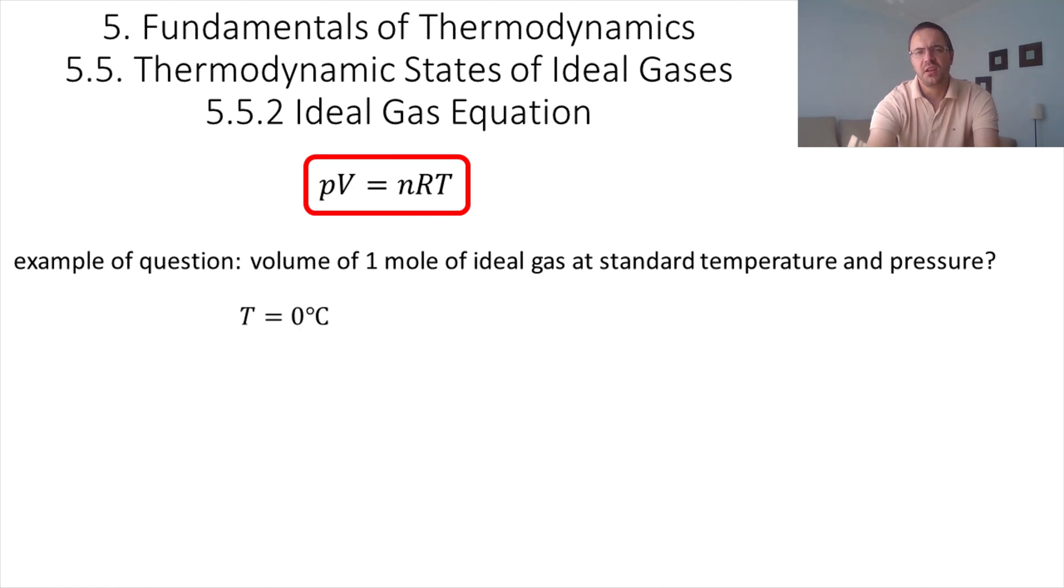Now, the standard temperature and pressure are actually defined precisely. The standard temperature is taken as zero degrees Celsius and the standard pressure is one atmosphere, that is 1.013 times 10 to the 5 Pascals. Now, don't forget to convert the temperature in Kelvin. So zero degrees Celsius is 273.15 Kelvin.